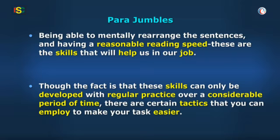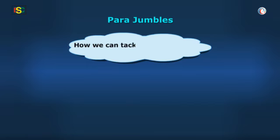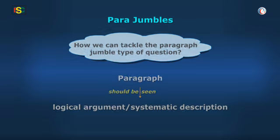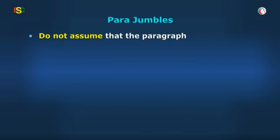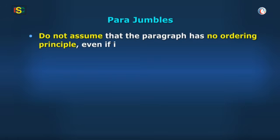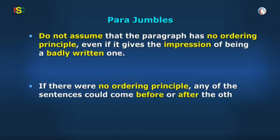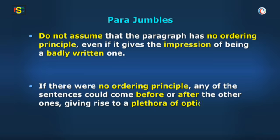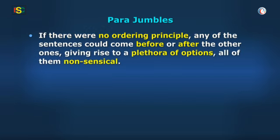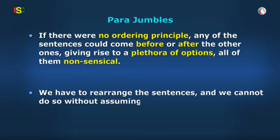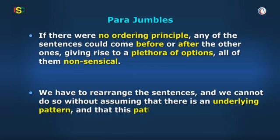Now that was an introduction to Parajumbles. Let's see how we can tackle the paragraph jumble type of question. The paragraph should be seen as a logical argument or systematic description. We must not assume that the paragraph has no ordering principle, even if it gives the impression of being a badly written one. The reason is simple — if there were no ordering principle, any of the sentences would come before or after the other ones, giving rise to a plethora of options, all of them nonsensical. But we have to rearrange the sentences, and we cannot do so without assuming that there is an underlying pattern and that this pattern can be recognized.